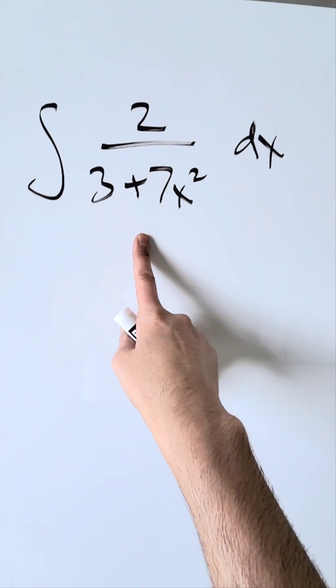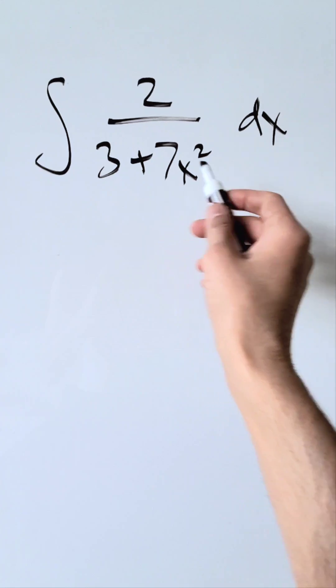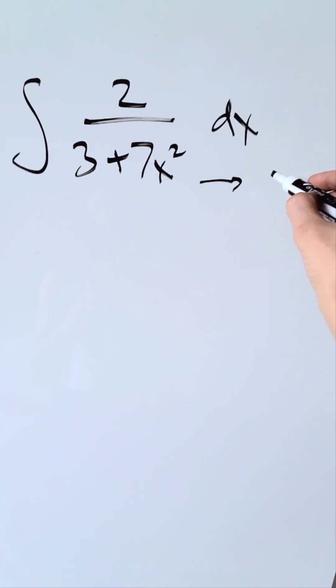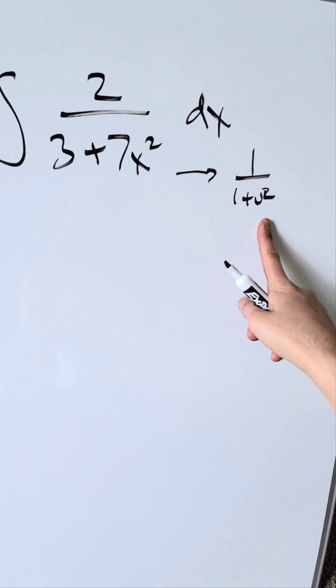Look at this indefinite integral: integral 2 divided by 3 plus 7x squared dx. Your goal when you see something like this is to convert the denominator into 1 over 1 plus u squared, because we can bring out the arctan anti-derivative.